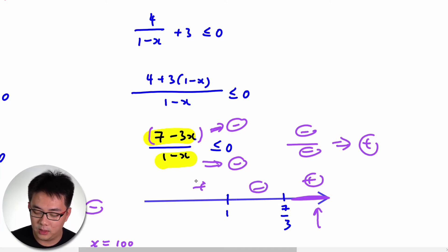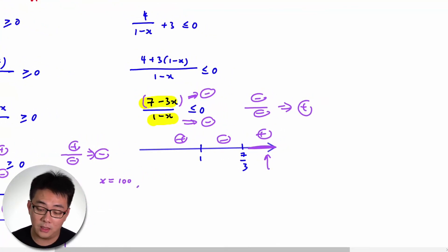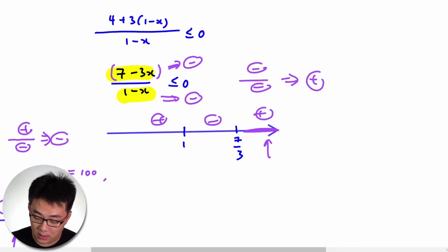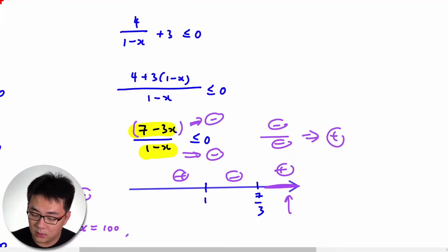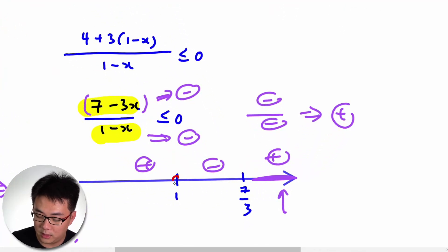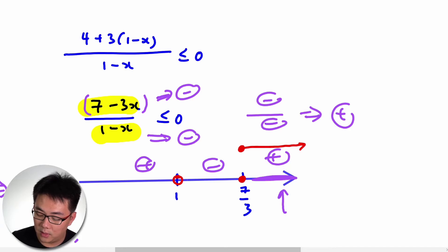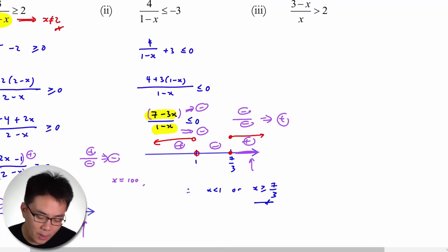Alternating the signs across the roots: the rightmost region (x > 7/3) is positive, the middle region (1 < x < 7/3) is negative, and the leftmost region (x < 1) is positive. Since we want the expression to be less than or equal to 0, and x cannot equal 1, the answer is x < 1 or x ≥ 7/3.